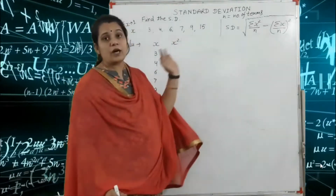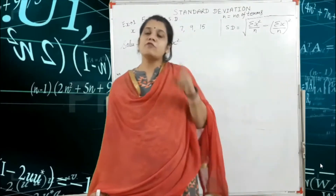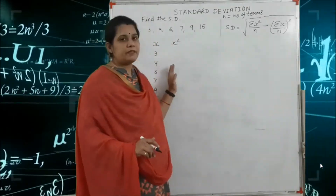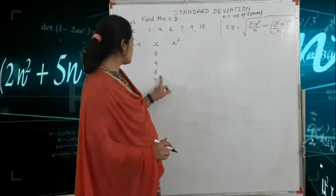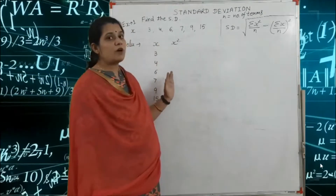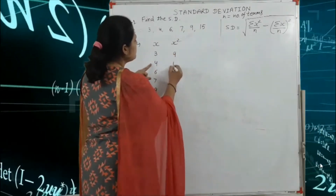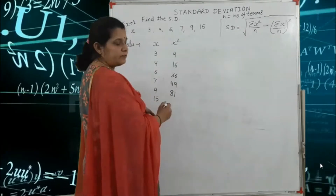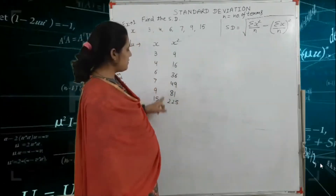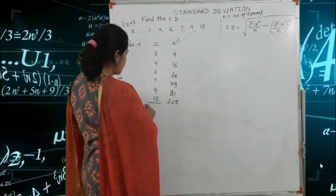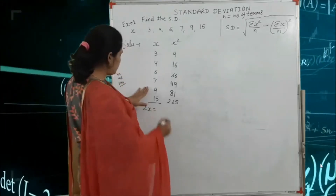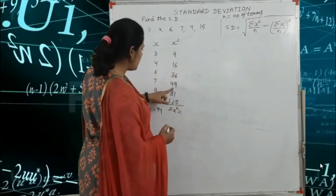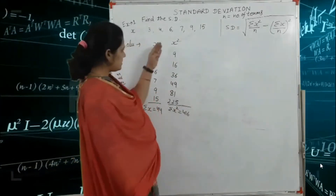First we write the x column, then map the x-squared column. That means: 3 squared is 9, 4 squared is 16, 6 squared is 36, 7 squared is 49, 9 squared is 81, and 15 squared is 225. After that, find summation x — the sum of all the x values. Then summation x-squared is the sum of all values in the x-squared column, which equals 416.